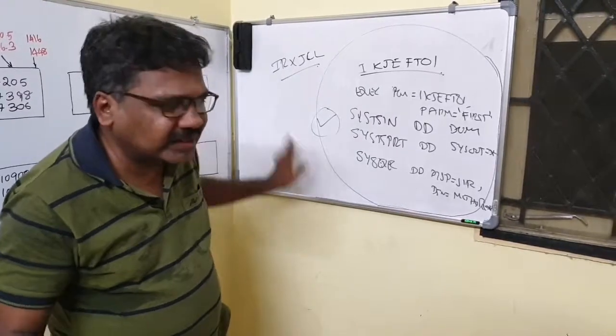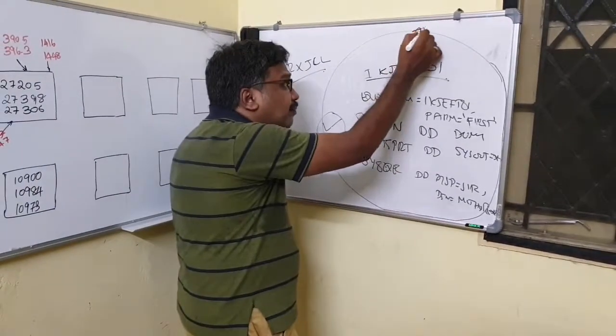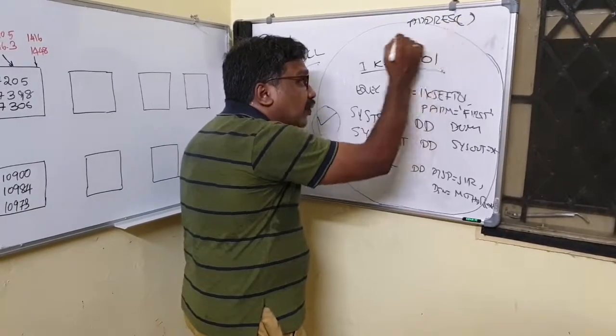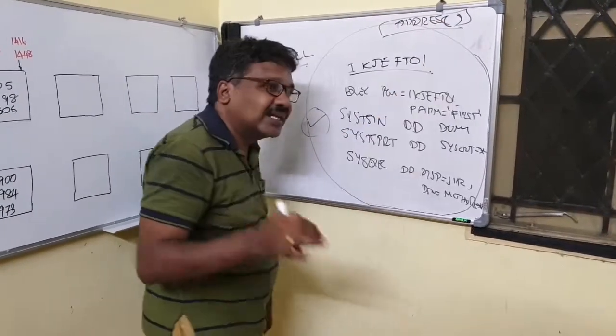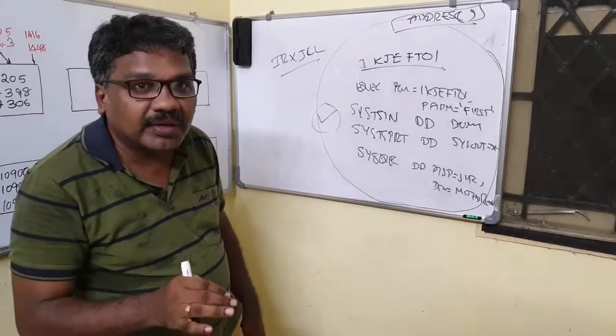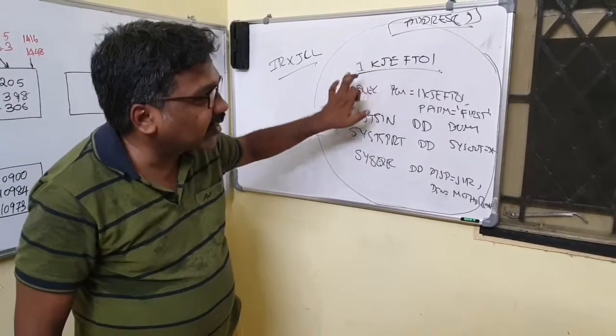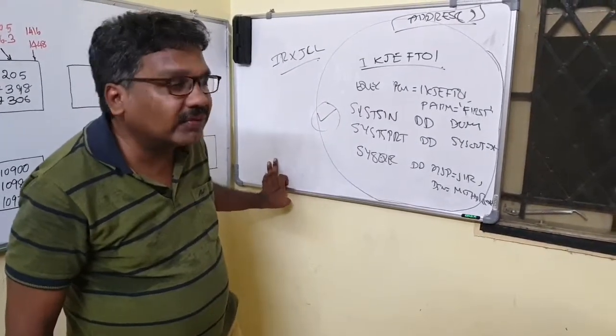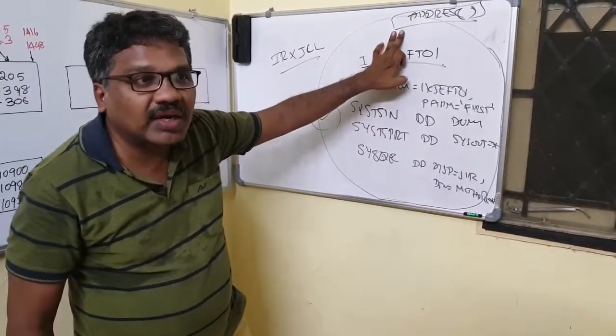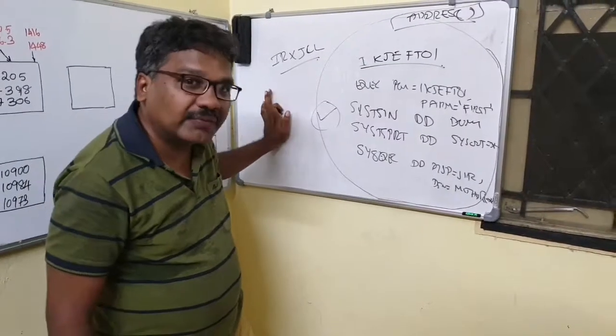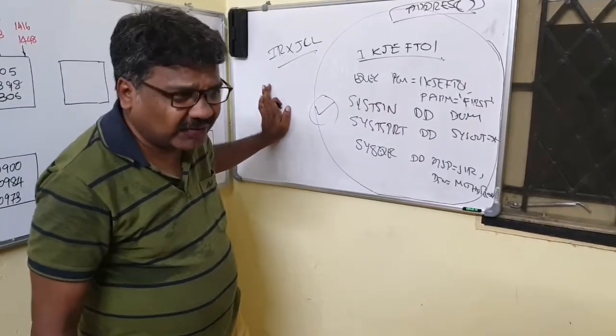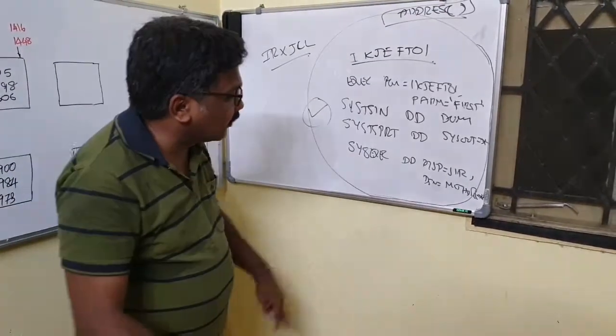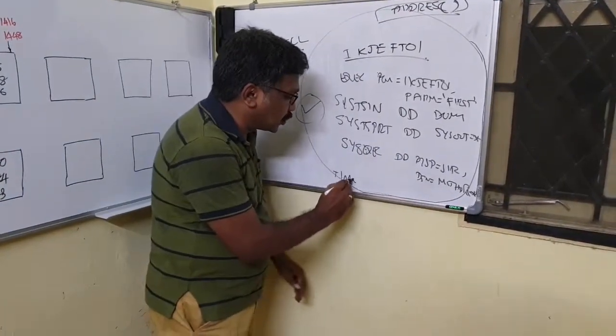So probably we'll write one program and we will execute in both the methods to make understanding of it. There is a command called address. If you use it like this, it will tell you what is the active environment at that point of time. So we give address command in IKJFT01 program as well as IRXJCL program. Here the default address environment is TSO, here it is MVS.